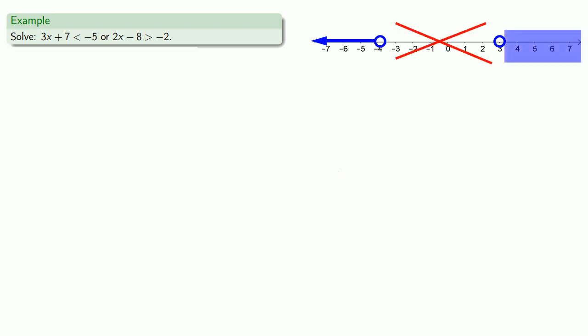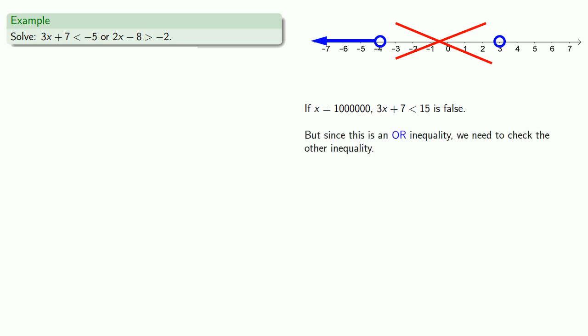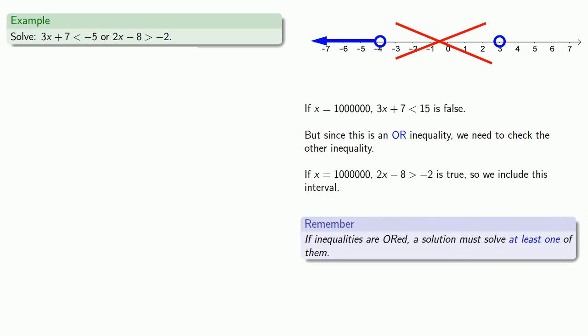On the right side, if x equals 1 million, 3x plus 7 less than negative 5 is false. But since this is an OR inequality, we need to check the other one. If x equals 1 million, 2x minus 8 greater than negative 2 is true. And because this is an OR inequality, we only need one of the inequalities to be true — we found one, so we include the interval that contains x equals 1 million.